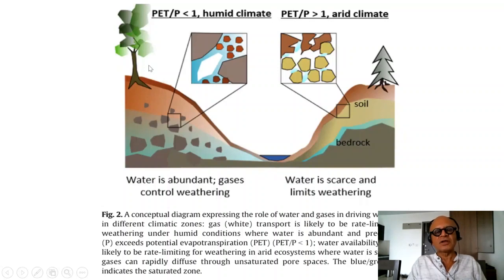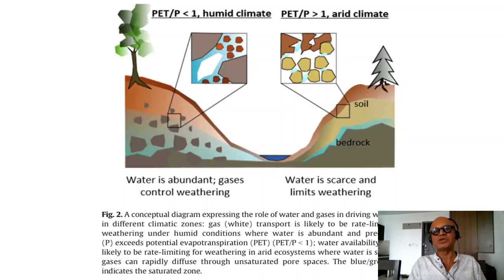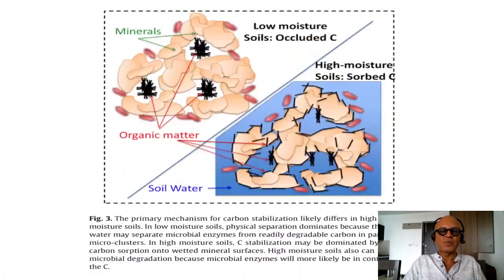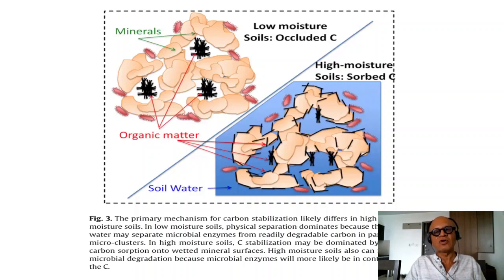In a humid climate, water is not a limitation — it is abundant and gases actually control the weathering. In a dry, arid climate, potential evapotranspiration tends to be higher than the meager precipitation that falls, so water is scarce and limits weathering. Of course there are details in terms of soil and rhizosphere processes, but in general the carbon in the soil begins to alter the structure of the soil itself, its water holding capacity, and its nutrient cycling. This is one of the reasons why people try to enhance soil organic carbon.